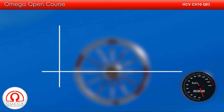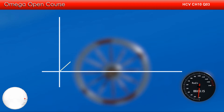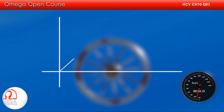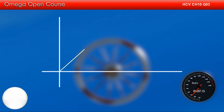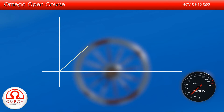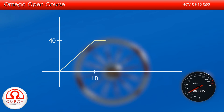Since the wheel starts from rest, its initial angular speed is 0. It accelerates at a rate of 4 radians per second squared for 10 seconds. Therefore, its angular speed will increase linearly and attain a value of 40 radians per second at the end of 10 seconds. Then for the next 10 seconds, the graph will move horizontally.